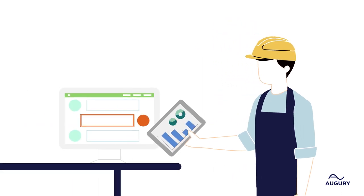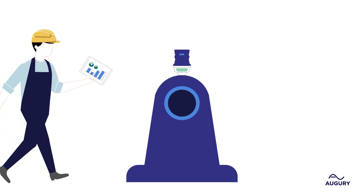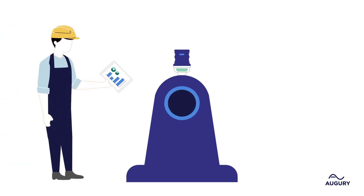Roy reviews Augury vibration analyst notes in Augury's platform, which point to a suspected mechanical looseness. Roy inspects the fan and decides to replace and tension the belt.